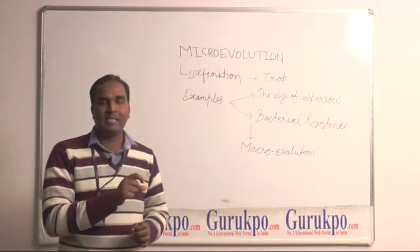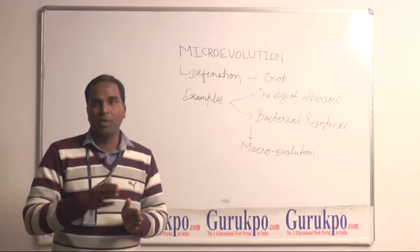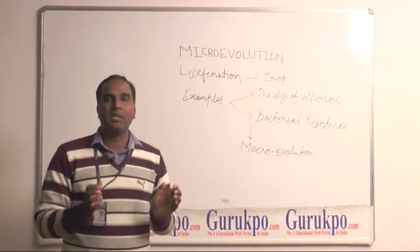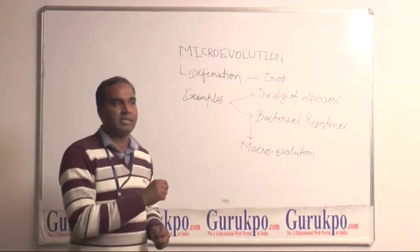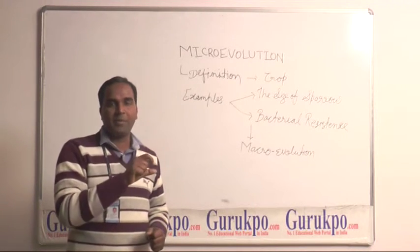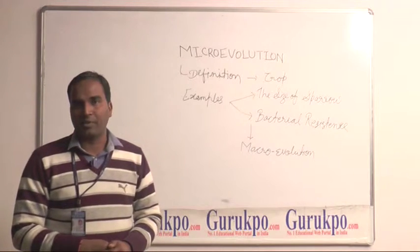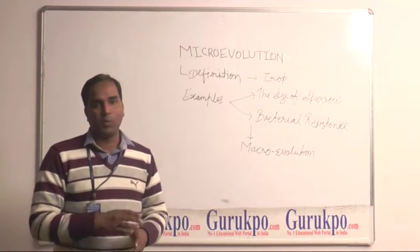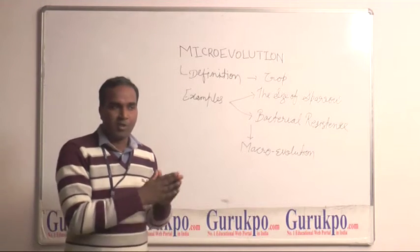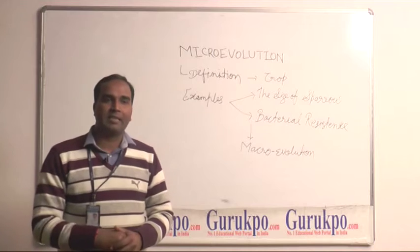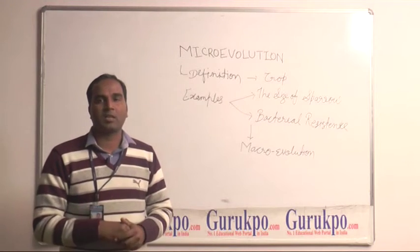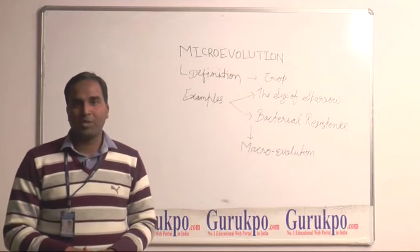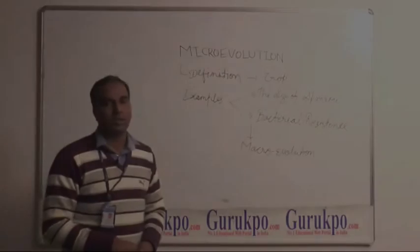We can study microevolution at the gene level from one generation to the next generation, but we cannot study it on a broad level. When microevolution converts into a broad range — from the first generation to the seventh or eighth generation — it becomes macroevolution. Thank you. For more details, please log on to gurukpo.com.